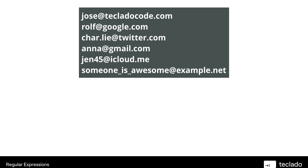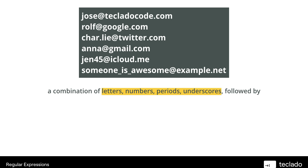Here's one final example — you've got some emails. What I see here is a combination of letters, numbers, periods, and underscores. For example, Jose is a combination of letters; Rolf is a combination of letters; Char.ly is letters and periods; Anna is letters; Gen45 is letters and numbers; someone_is_awesome is letters and underscores. So you've got this combination of potentially different characters, and that's always followed by an at symbol.